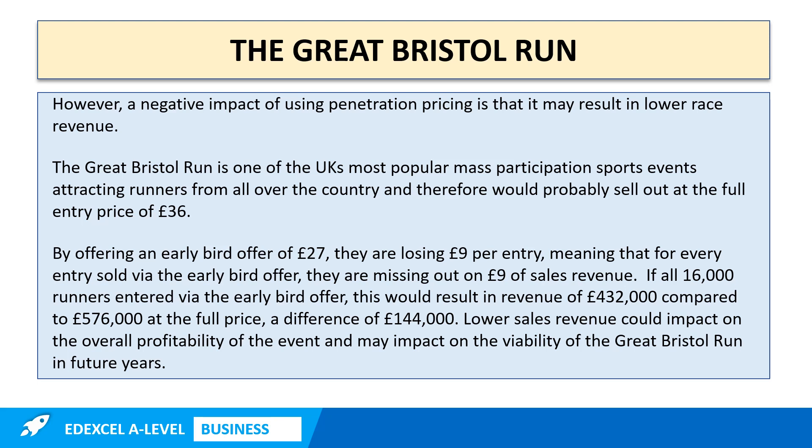We've got logical and coherent chains of reasoning, and there is some really good application in this paragraph, especially using the data. There's a recognition that for every entry sold at £27 they're going to lose £9 of sales revenue, and we've worked out the impact that would have on overall sales revenue if everyone entered via the early bird offer — £16,000 multiplied by £27 equals £432,000, and £36 multiplied by 16,000 entries equals £576,000. A really good technique to get better application is to use data in your response. If an extract contains any data, use it in your answer to support your arguments, as that is a very good way of getting application.